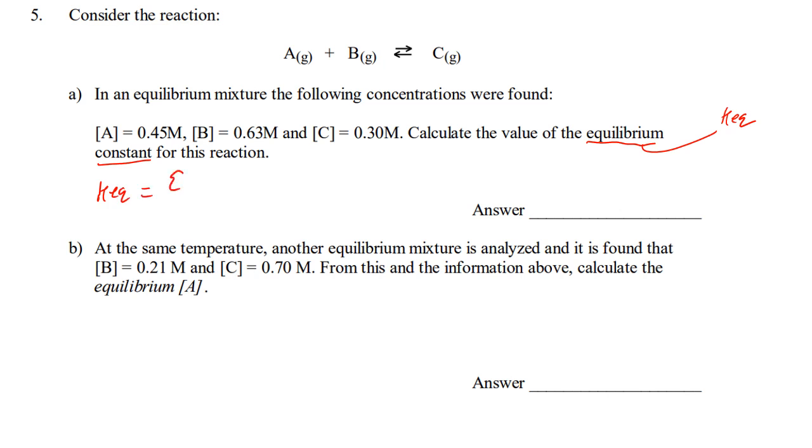A little better parentheses. Concentration of the products, which happens to be C, over the concentration of reactants, which is A and B. In other words, KEQ equals 0.3, divided by A, 0.45, and 0.63.